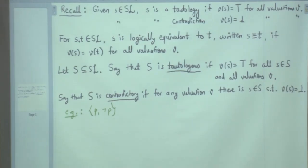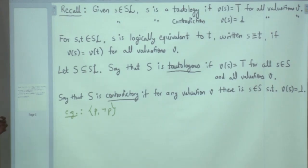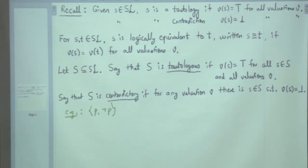In real life, this is like a group of friends with contradictory opinions — one person says P, another says negation P. It's not that individually they are problematic, but as a group they are problematic. They contradict each other.